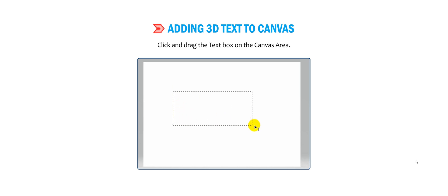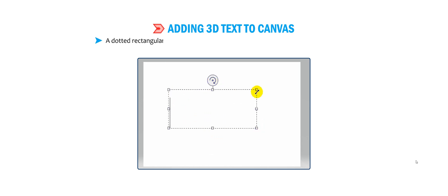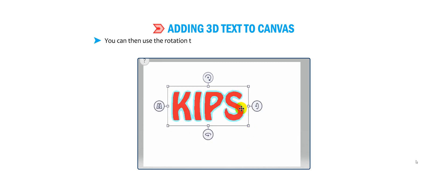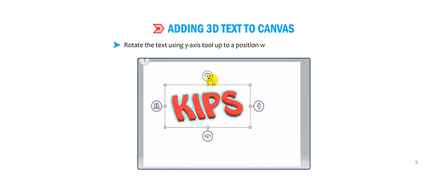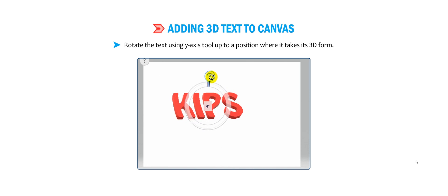The pointer changes to a crosshair sign. Click and drag the text box on the canvas area. A dotted rectangular box with options to rotate the text box will appear, with a blinking cursor inside it. Type the text as shown in the text box. You can then use the rotation tools — X axis, Y axis, and Z axis — to change and convert the text into 3D. Rotate the text using the Y axis tool to a position where it takes its 3D form.